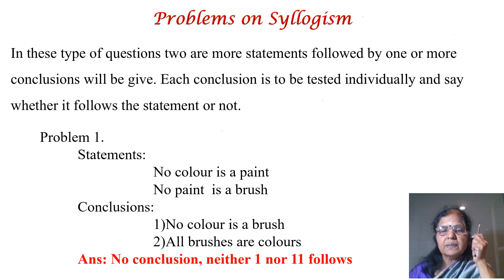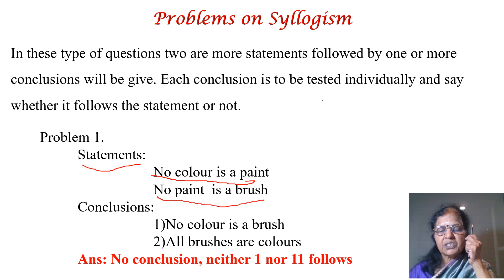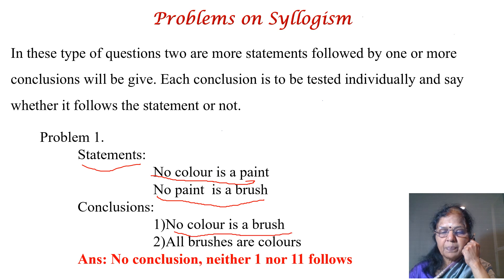Now read the statement. The first statement given is: no color is a paint. The second statement is: no paint is a brush. The first conclusion is: no color is a brush. And the second conclusion is: all brushes are colors. Now we are going to test the first conclusion — no color is a brush — only one at a time.